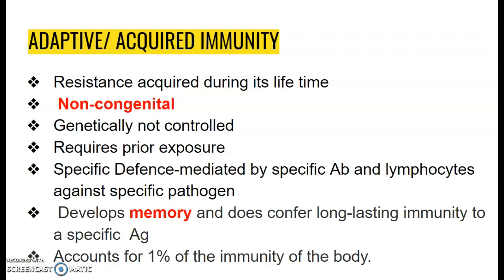Adaptive immunity accounts for just 1% of the total immunity of the body. But this component is very vital, as it is the immune mechanism by which the body resists pathogens after they have successfully crossed the innate immune barriers.